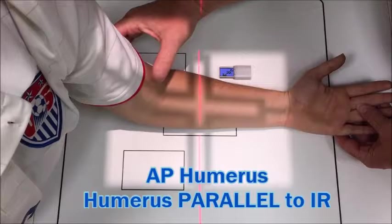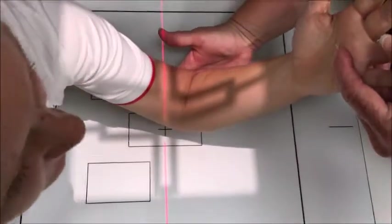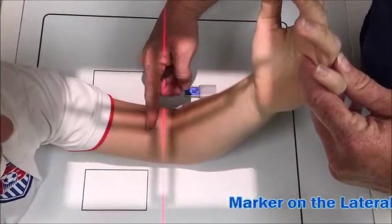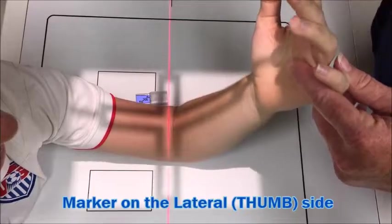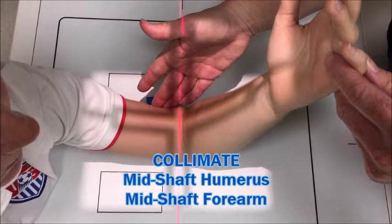For the second to get the distal end of the humerus, have the patient sit back down. Your central ray, mark, collimate down, that would be your second AP shot.